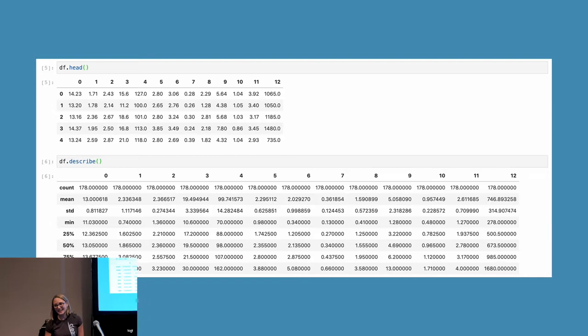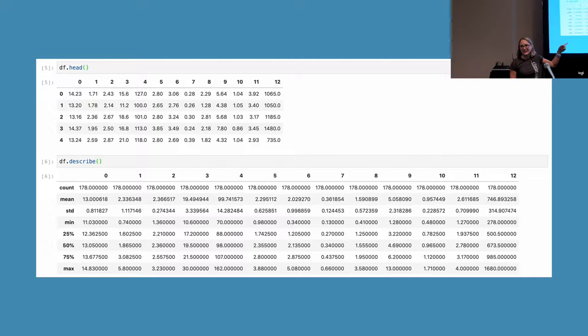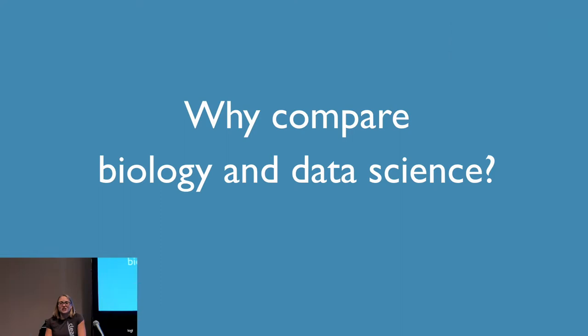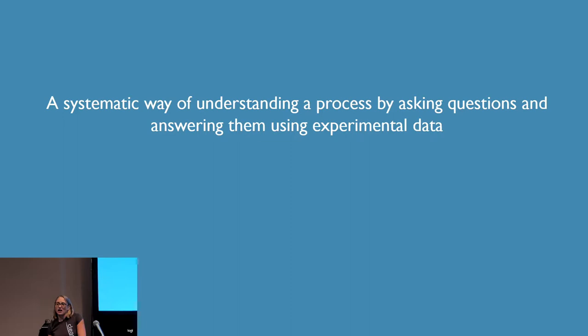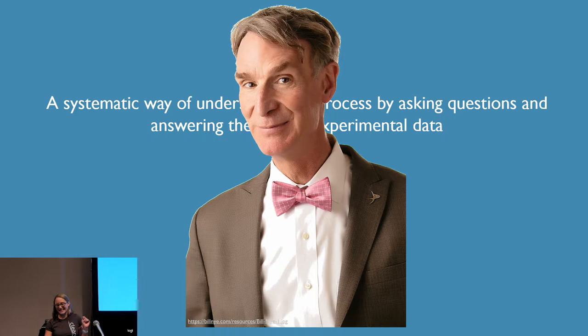In all seriousness, there are some differences. In data science your data might look something like this, and I was used to data that looked a little bit like this—DNA run on a gel. I have no idea what it is because, again, questionable documentation practices. But they're really both a systematic way of understanding a process, modeling that process by asking questions and then answering them using data. That's science. That's the scientific method right there.